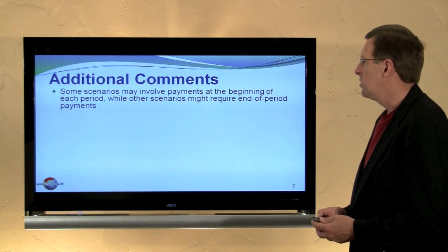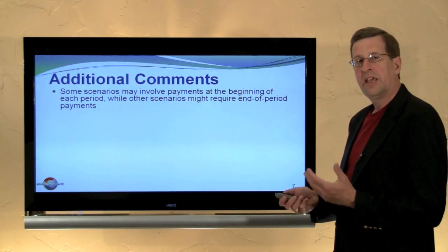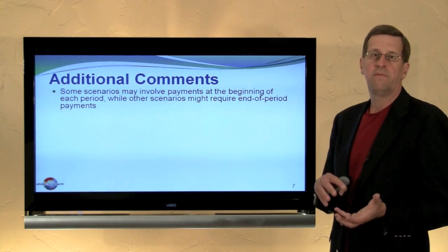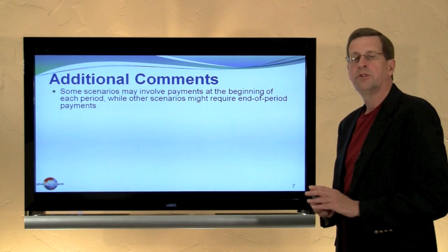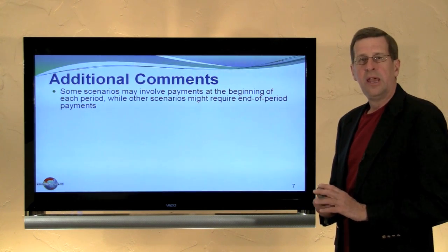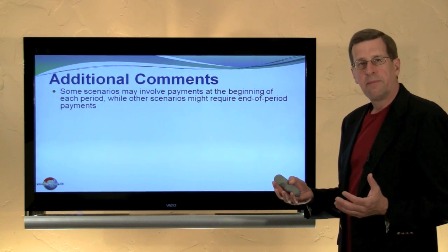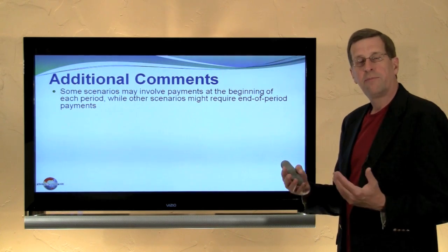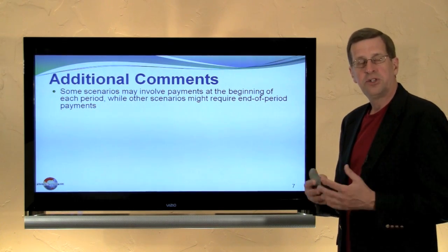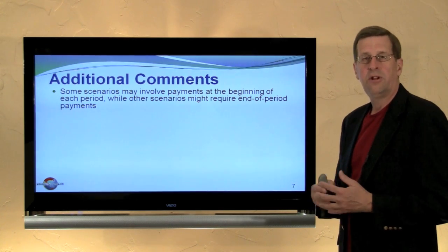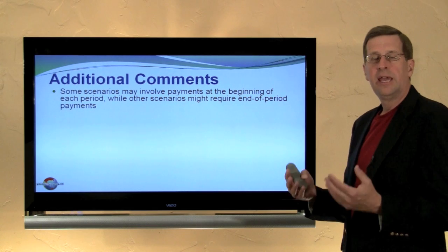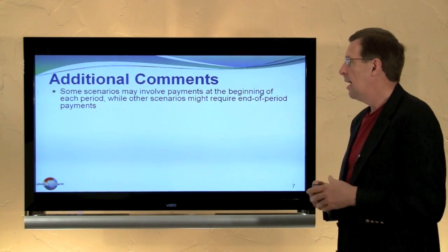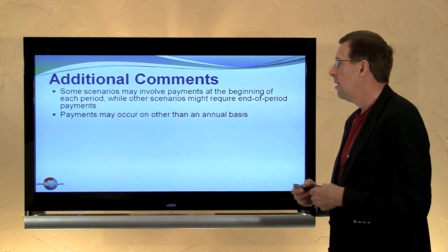Let's close with a few additional comments. In thinking about annuities, recognize that some scenarios may involve beginning-of-period payments while others involve end-of-period payments. In the supplements in the textbook there are alternative present value and future value tables reflecting these alternative timing patterns for payments. More is said about this in Chapter 24, but for now we won't dwell on that further.